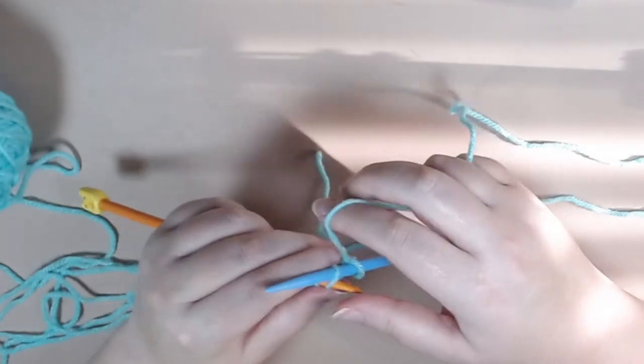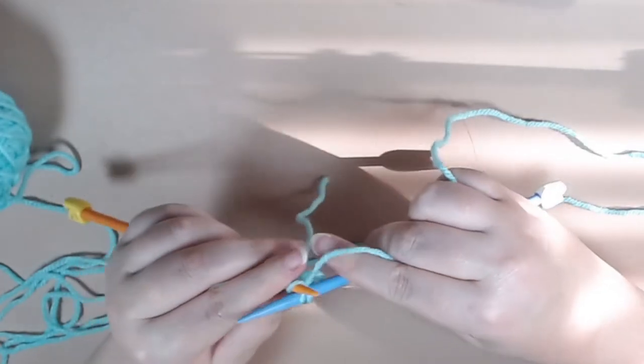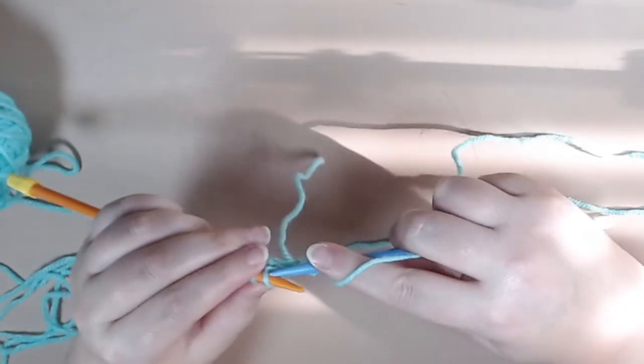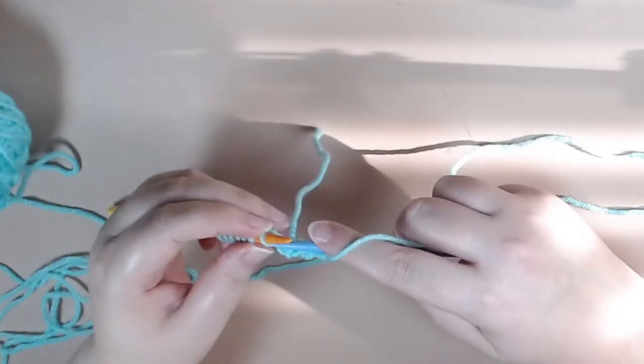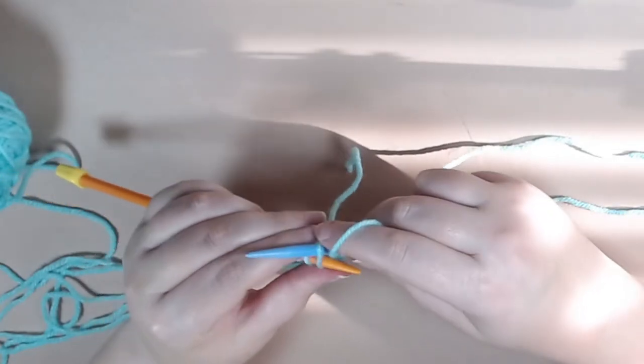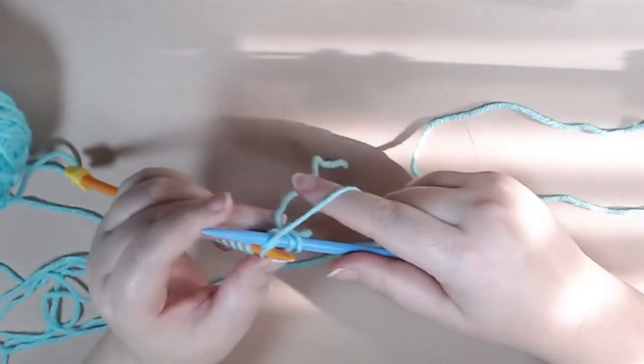So knitting in the back loop is actually not that complicated. It's pretty straightforward, just poke your needle into the back loop instead of the front loop and then just knit as normal.